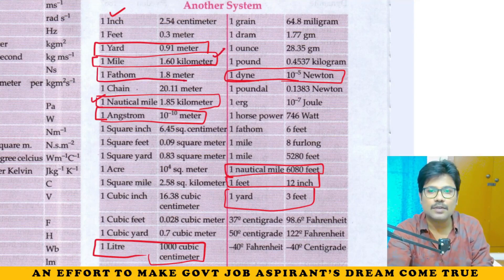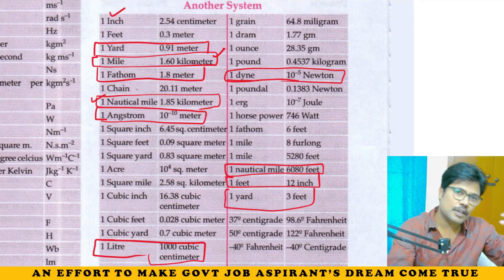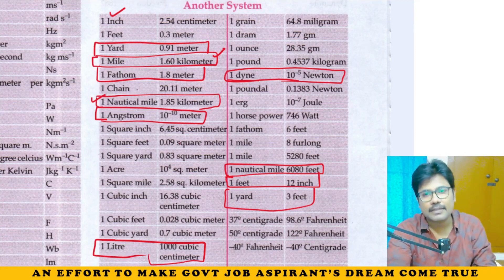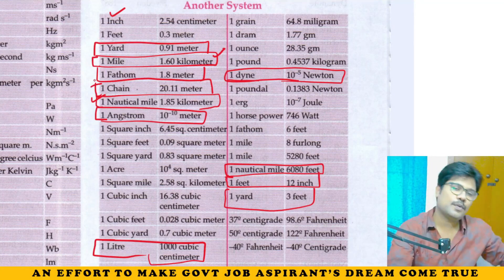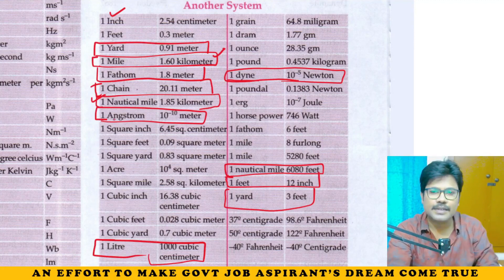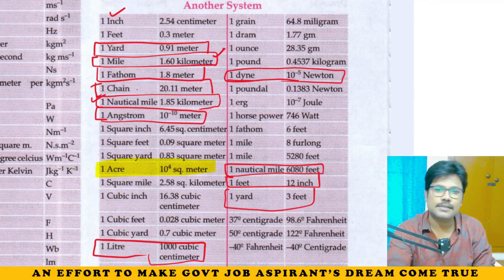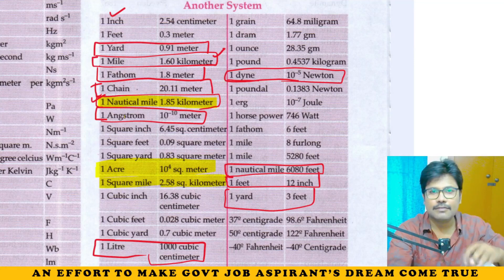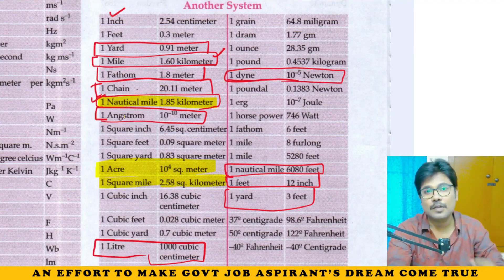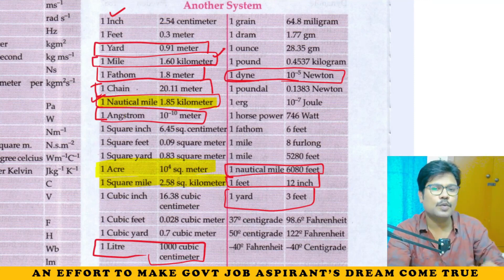One mile is equal to 1.6 kilometers. One fathom is equal to 1.8 meters. One chain is equal to 20.11 meters. One hectare is 10 to the power of 4 square meters. One square mile is equal to 2.58 square kilometers.